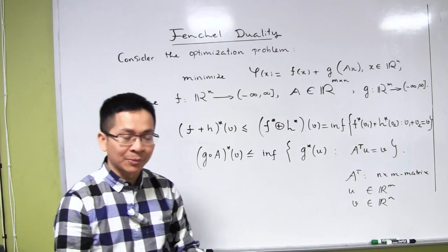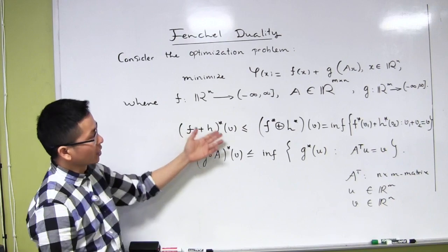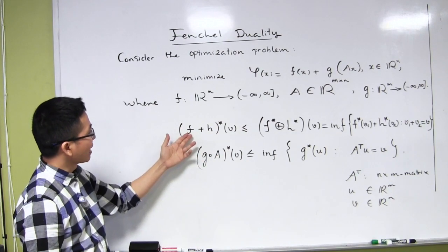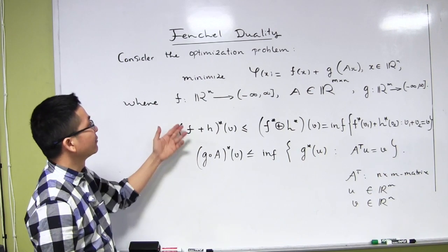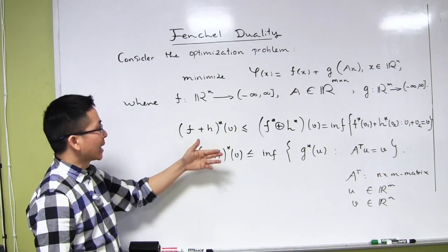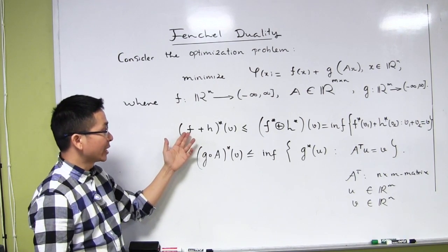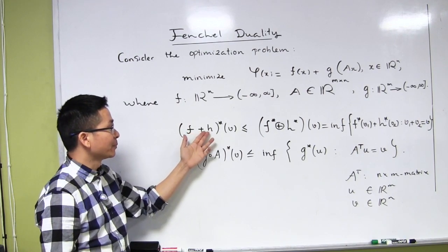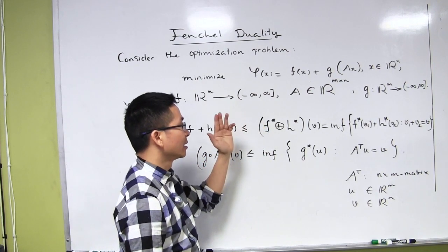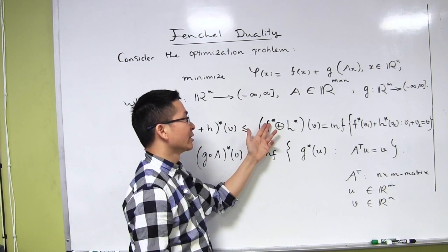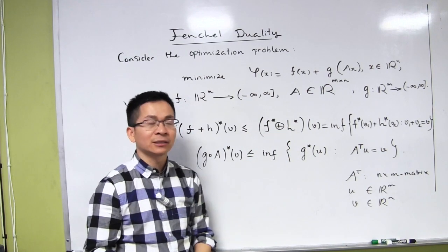Before that, let me recall two important results. Here f and h are two extended real-valued functions defined on R^n. As we saw in the previous lecture, the Fenchel conjugate of the sum of f and h is always less than or equal to the infimal convolution of the Fenchel conjugate of f and the Fenchel conjugate of h.